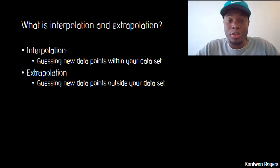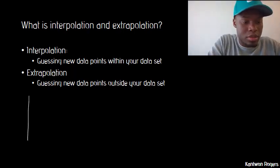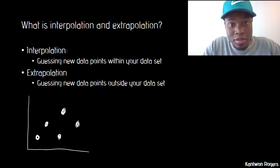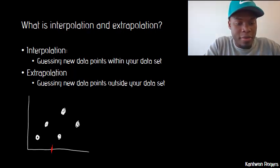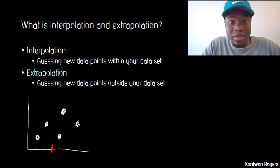Given a certain dataset, interpolation tries to guess new points that are within your dataset that you currently don't have values for. So for instance, let's say I had some coordinate system with x's and y's and I have five data points. What interpolation is trying to do is say I want to guess what the y value is at a certain x. Notice I don't have a y value for that x value, however it's within my dataset. So guessing what this new y value would be is called interpolation.